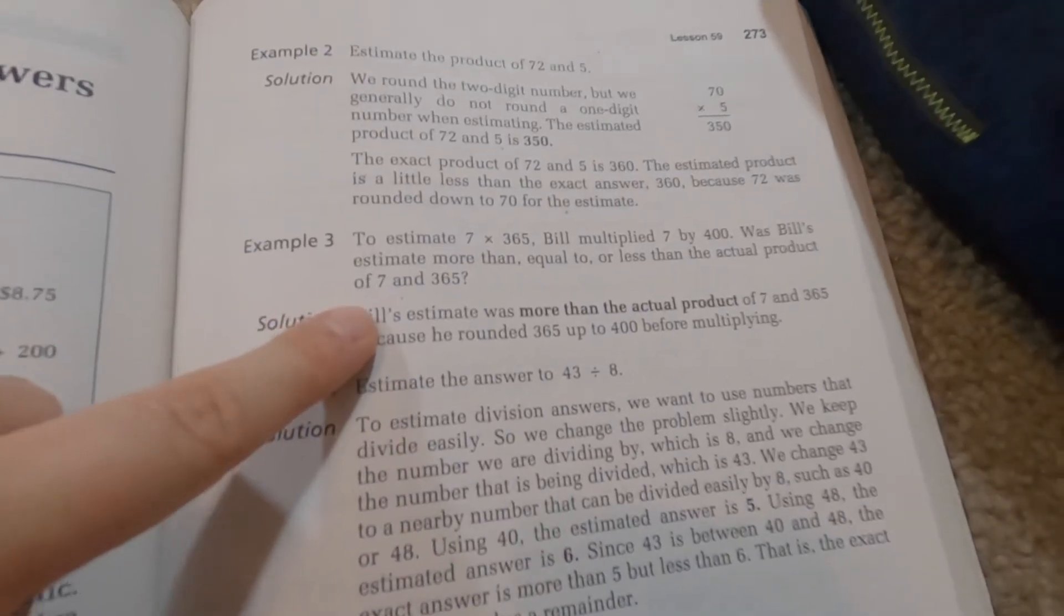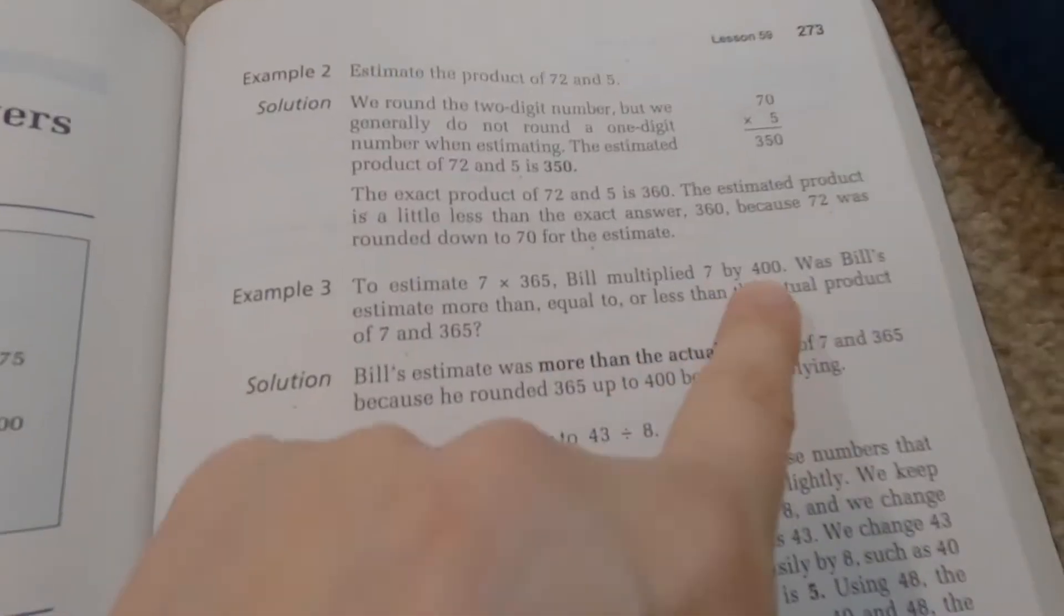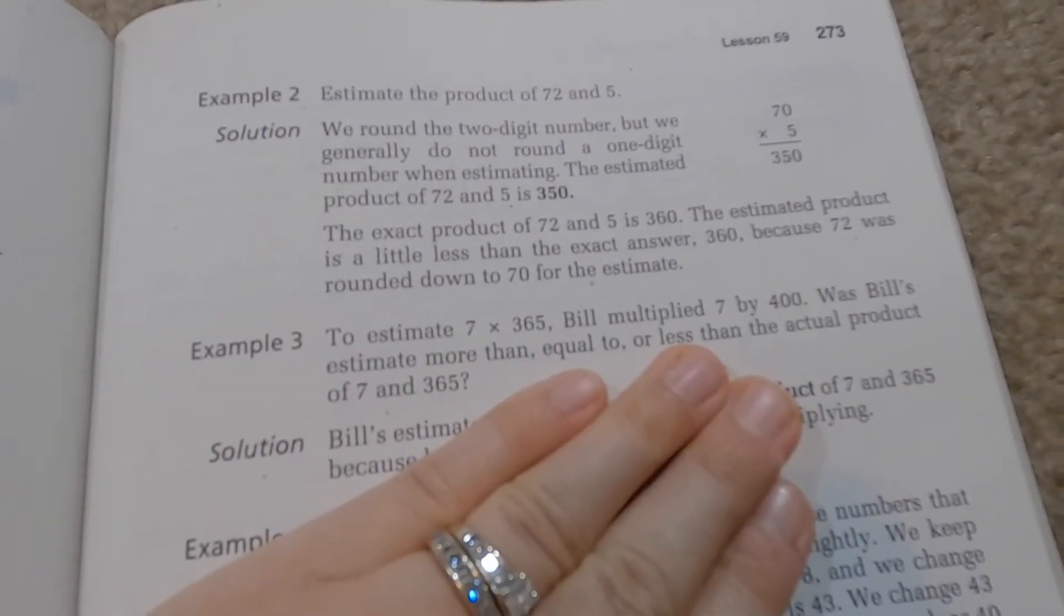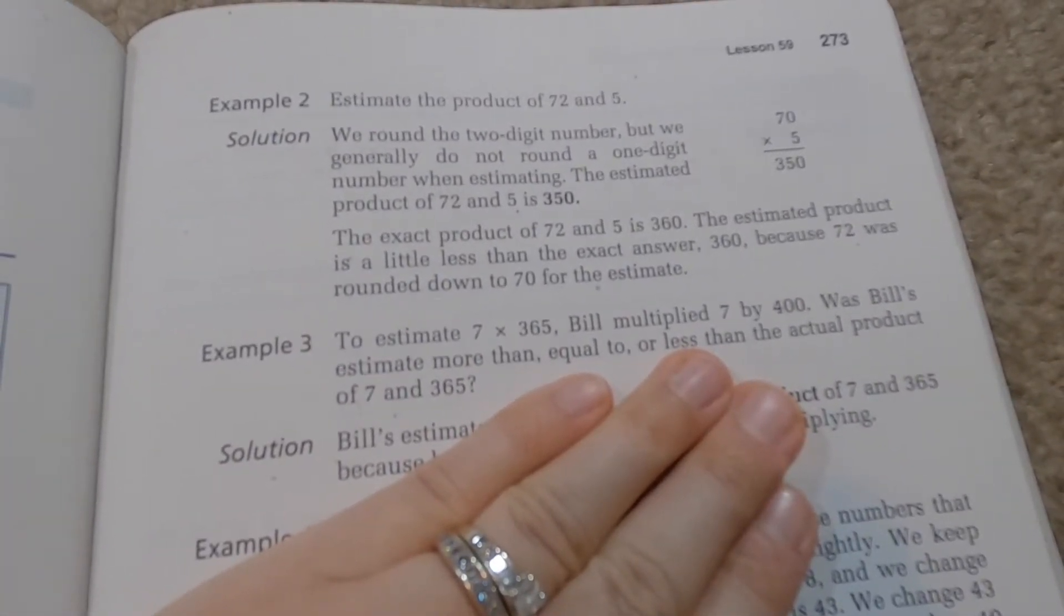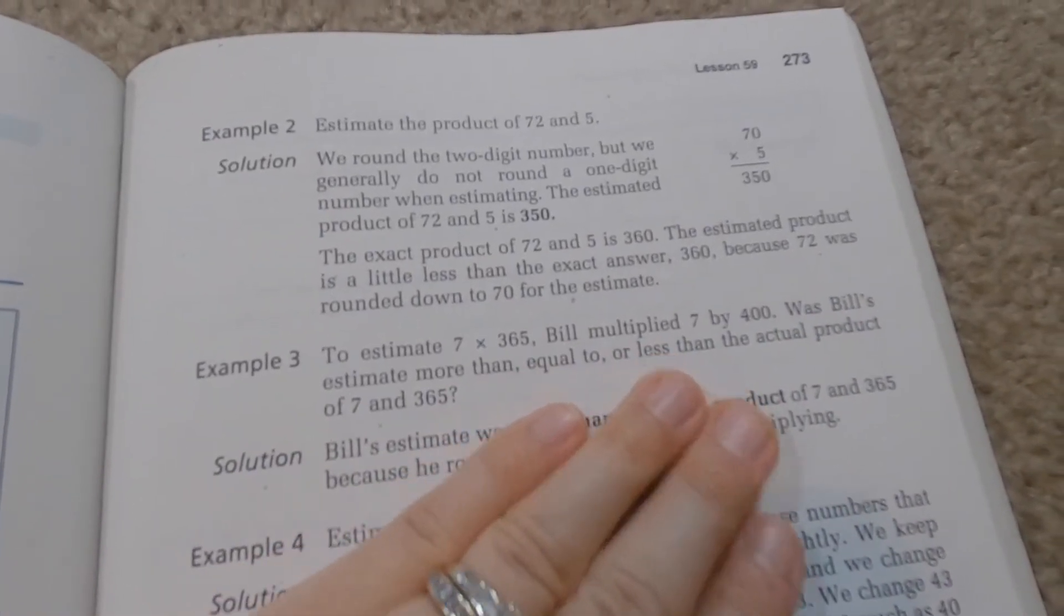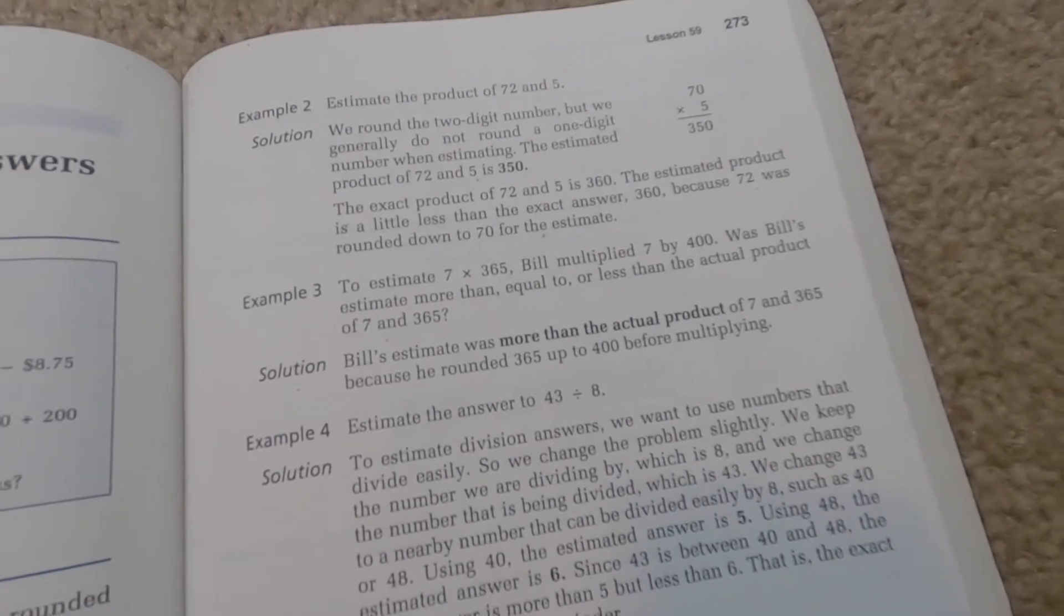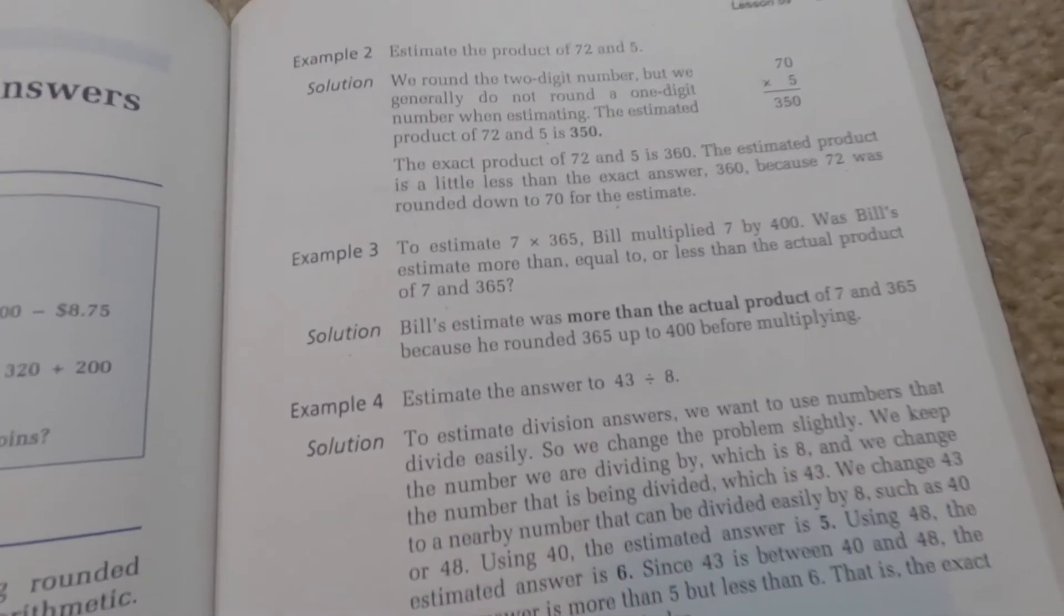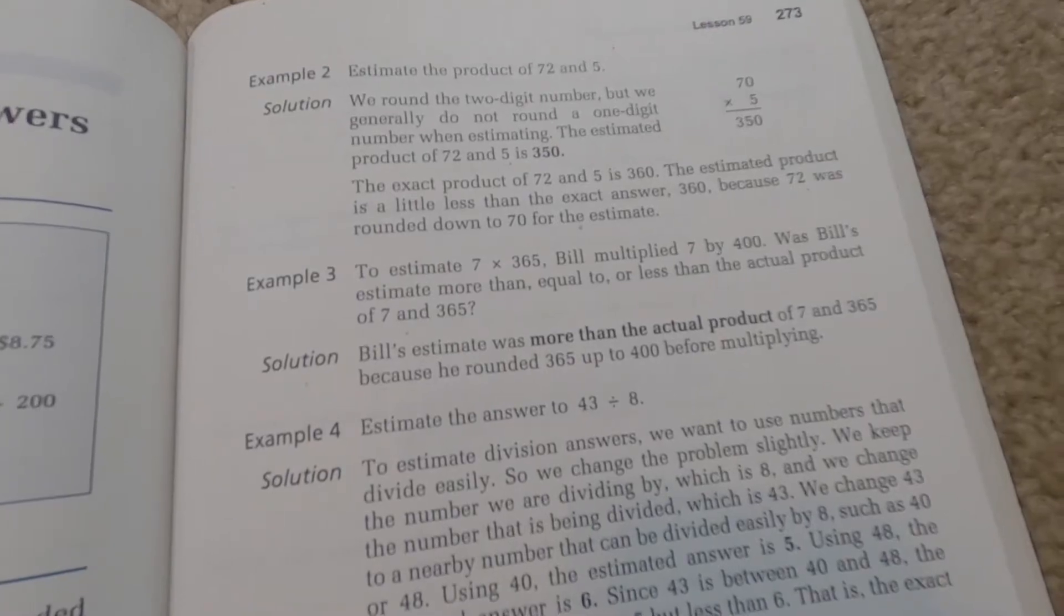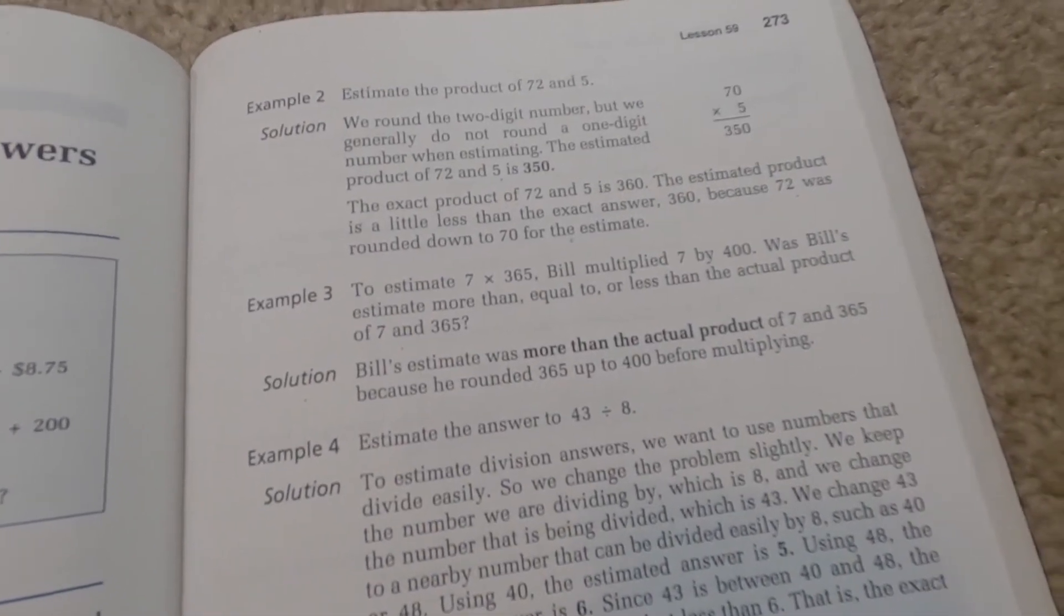Now here it says to estimate 7 times 365. So which one was going to be more? Yes. And that one was the estimate because he rounded it. So Bill's estimate was more than the actual product of 7 times 365 because he rounded 365 up to 400. Does that make sense? Yeah.